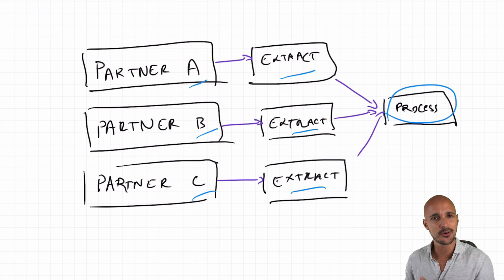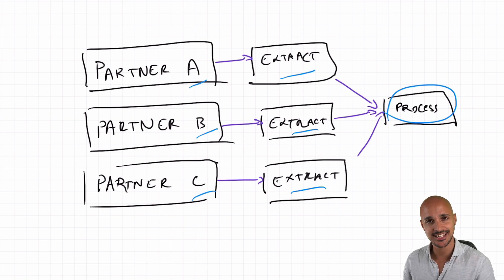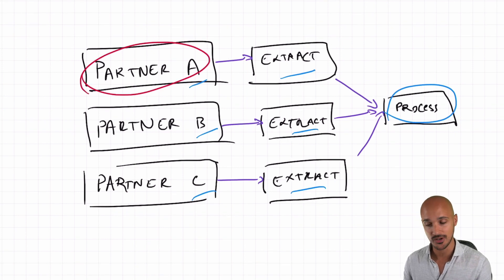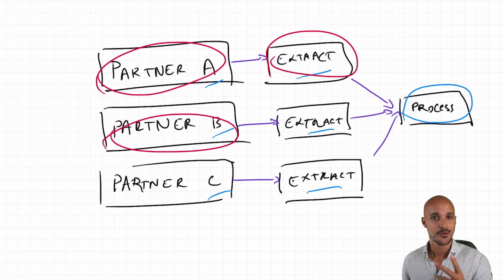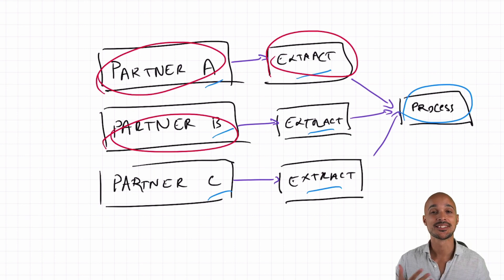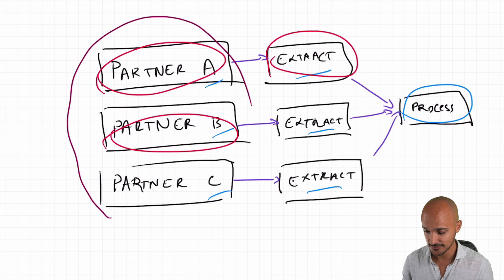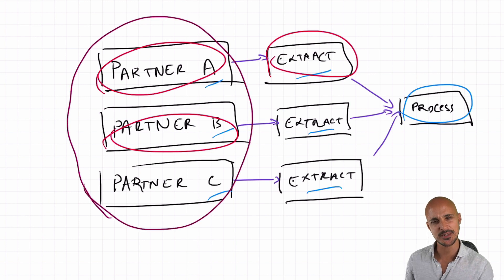This is a very simple data pipeline but it is a very common use case for Airflow. Now here's the question: how do you check that your data has arrived? That Partner A has sent the data you are waiting for, or Partner B has sent the data you are waiting for, either on your file system or on your S3 bucket? How do you make sure that your data is there so that you can move to the next task — extract? This is where you need to use a special kind of operator in Airflow: the sensors. Those tasks will be Airflow sensors, more specifically either the FileSensor or the S3KeySensor.